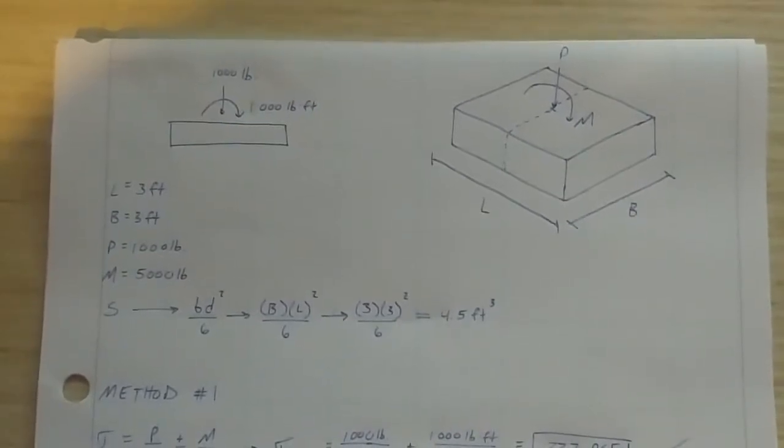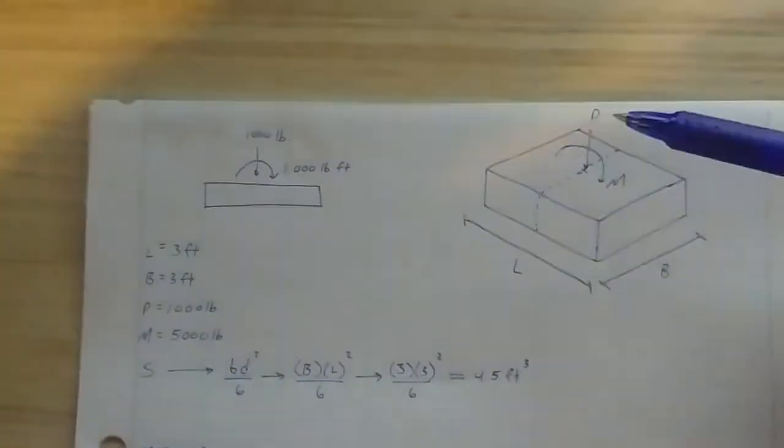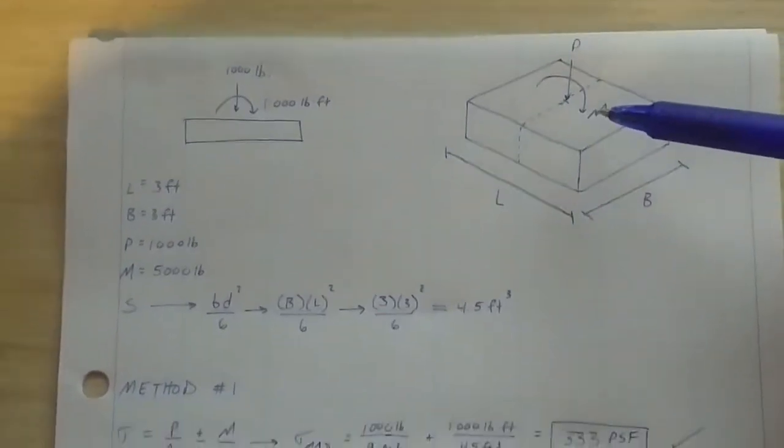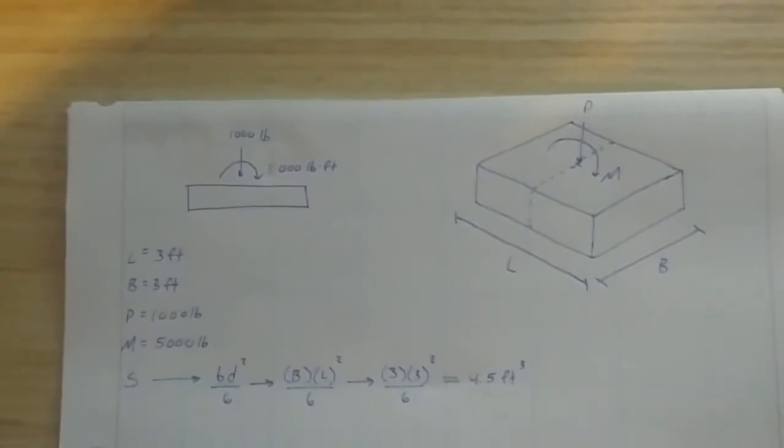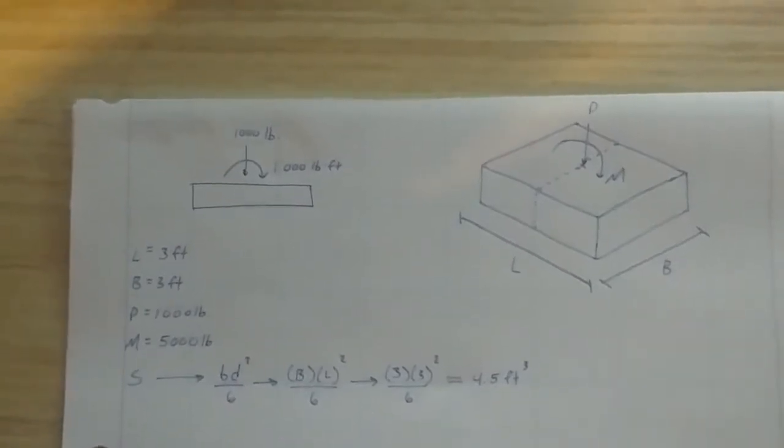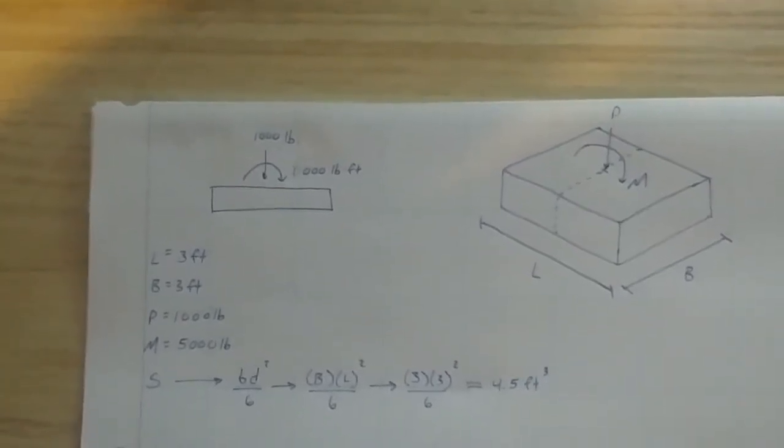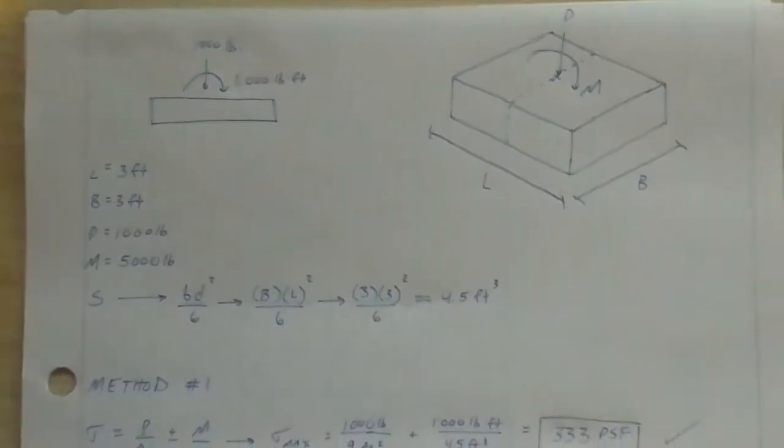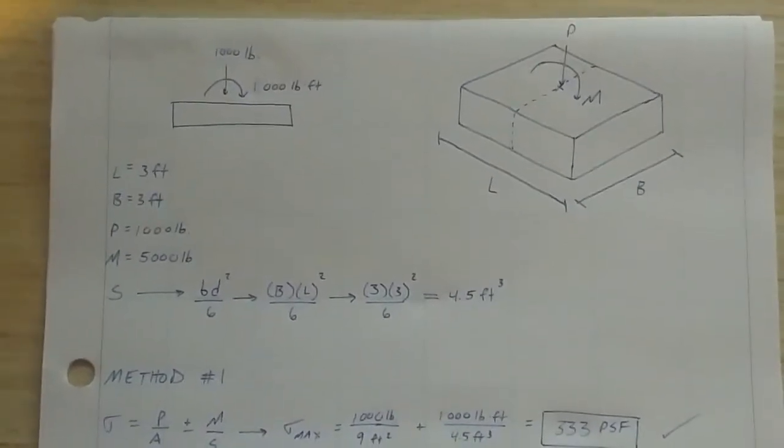In the previous episode, we talked about a scenario where our vertical force P and our moment applied about the foundation put us in the category of our eccentricity being less than or equal to L over 6. We also talked about method number 2 as well as method number 1, when our M over S is less than our P over A. If you're hazy from what we talked about last time, I advise you to go back to my previous video to catch up and then come back to this one.